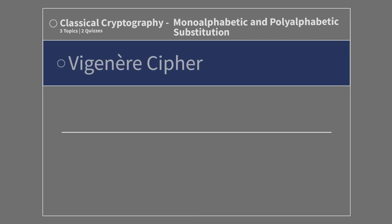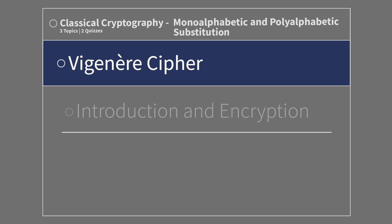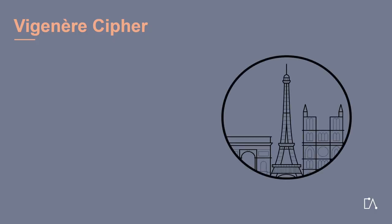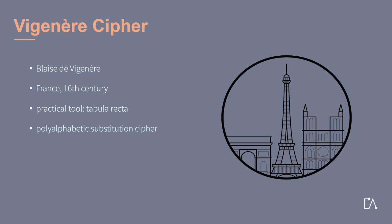Classical cryptography: mono-alphabetic and poly-alphabetic substitution. Vigenère cipher — introduction and encryption. Our next cipher is named after its inventor. The so-called Vigenère cipher was developed in France in the 16th century by Blaise de Vigenère. An essential and highly practical tool for this cipher is the tabula recta, which was developed by a German Benedictine Abbott already in 1508. We will have a closer look at it later on. This cipher is an example of a poly-alphabetic substitution cipher.